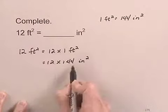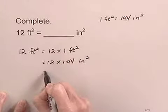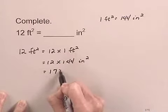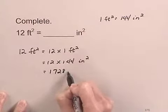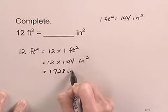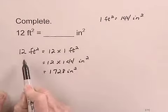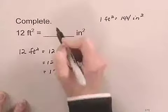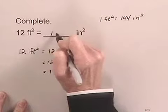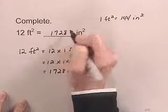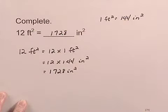And when I multiply 12 and 144, I get 1728 square inches. So 12 square feet is equal to 1728 square inches.